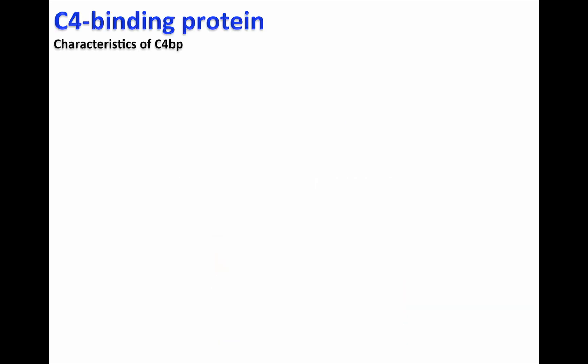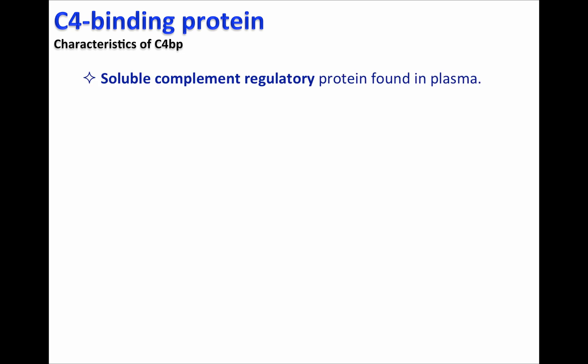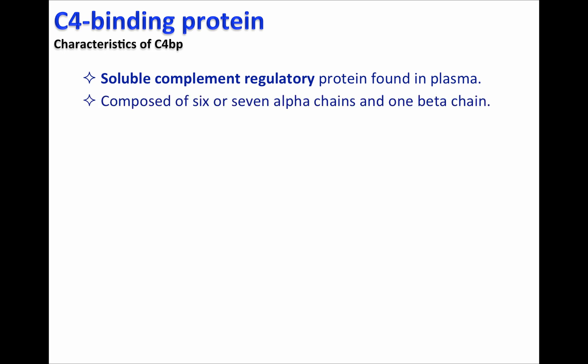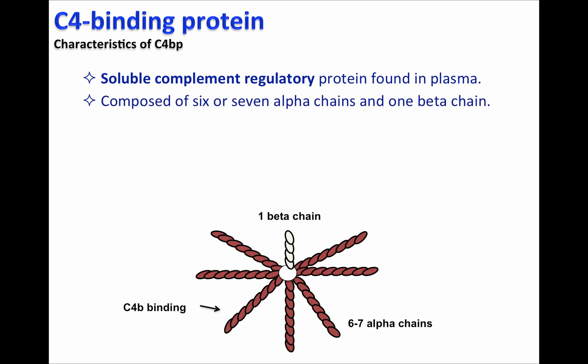C4 binding protein, or C4BP, is a soluble complement regulatory protein found in plasma. It is composed of six to seven alpha chains, as you can see here in this figure, and one beta chain. The alpha chains contain a motif that allows C4BP to recognize C4B.